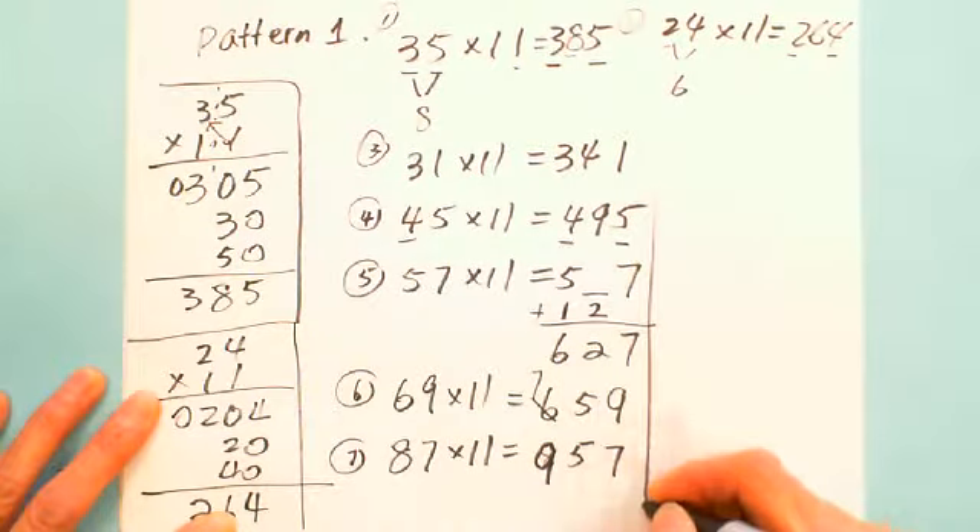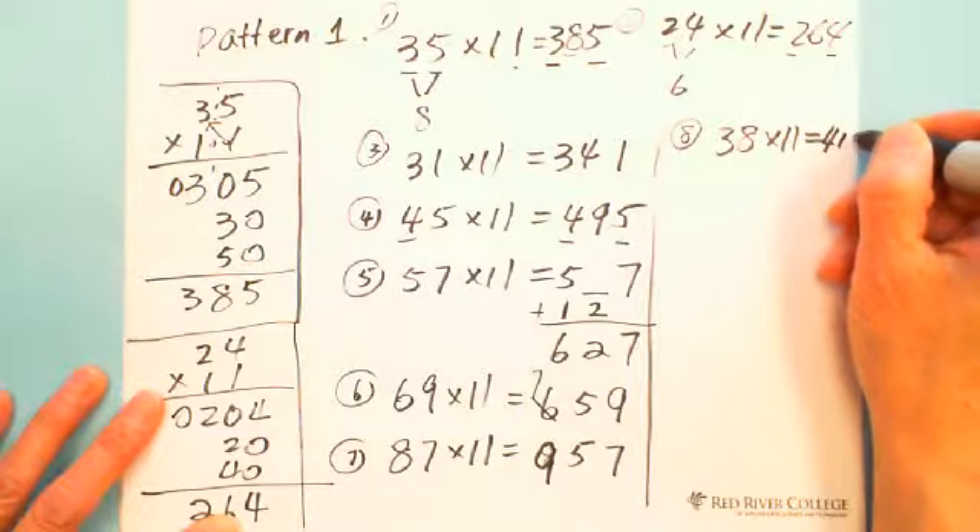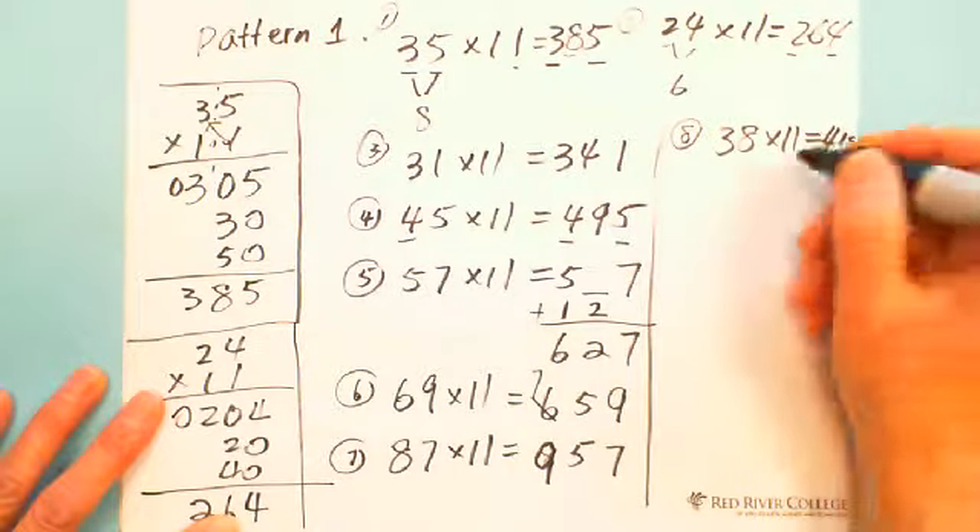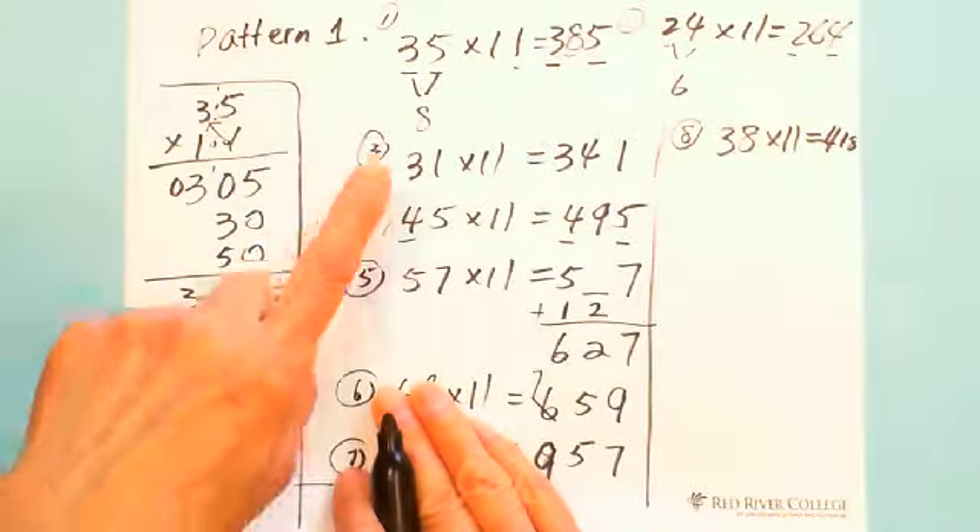When you practice, you can do it much faster. You say, okay, let's say 38 multiplied by 11. I say, okay, I first think of 3 plus 8, which is 11, that's why the first digit is not 3. Carry 1, it's 418, right? So you need to practice to make it faster. This is pattern 1. Any number multiplied by 11, we'll use this pattern.